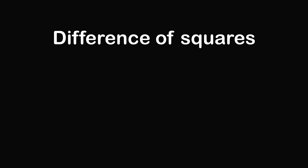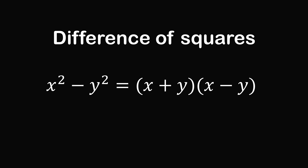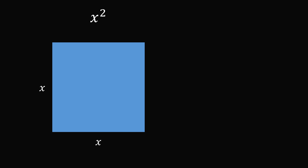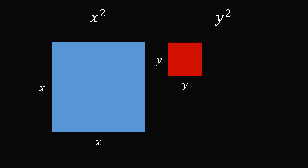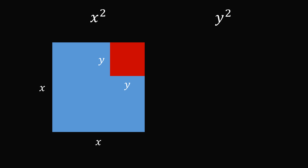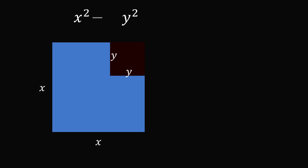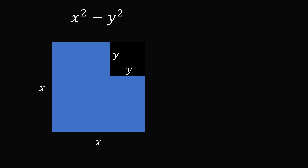To get started, I will first review the formula for the difference of squares. Here's a fun geometric way to understand the formula. We start out with one square with a side length equal to x, so its area is x squared, and another square with a side length equal to y, with area y squared. x squared minus y squared will be the difference in areas of these squares.